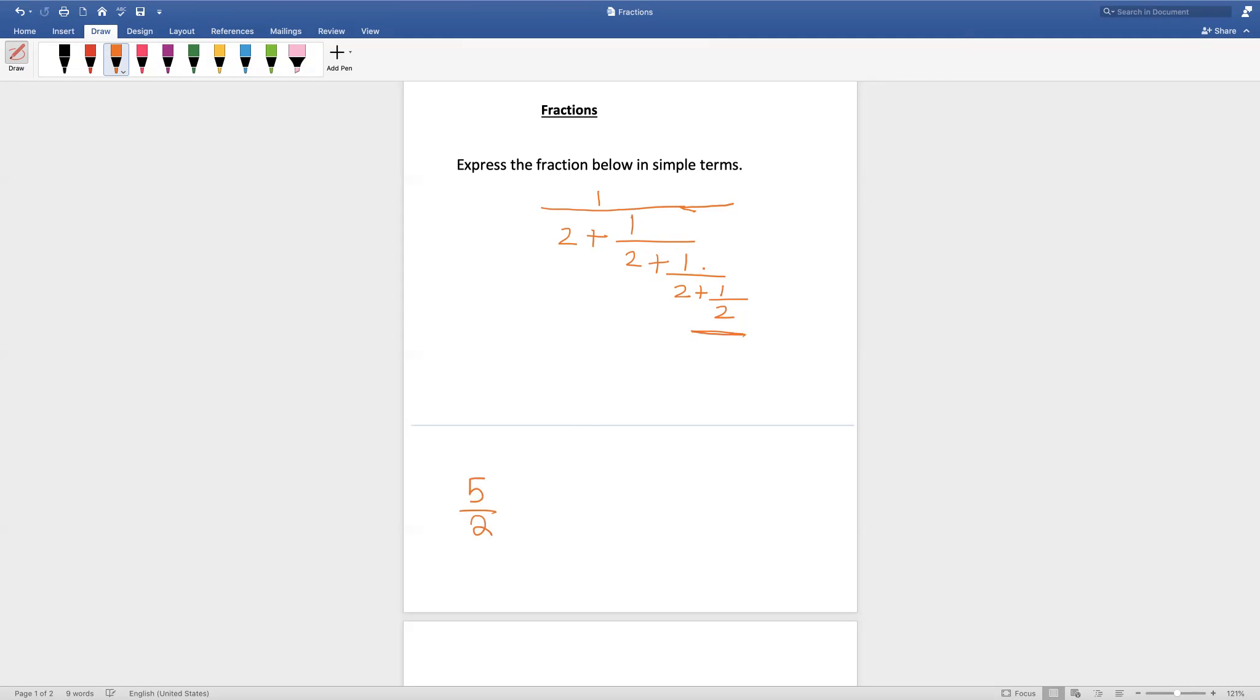As you see here, there is a 1 over a fraction. That means we take the reciprocal of the fraction. So then it will become 2 by 5. And now we have to add another 2, which means it becomes 12 by 5.